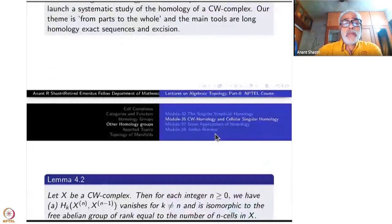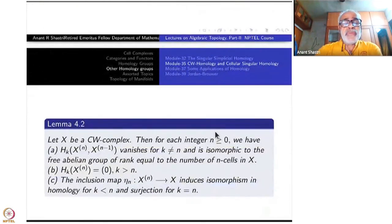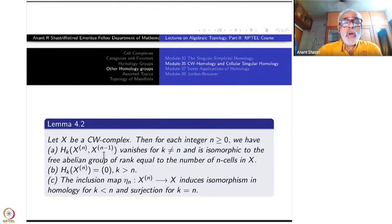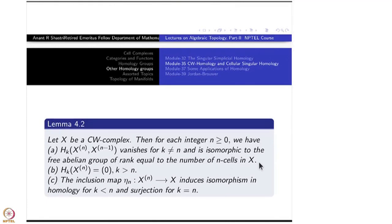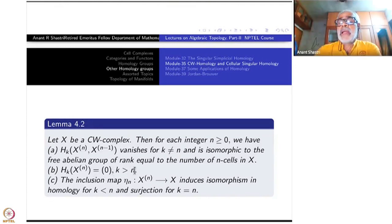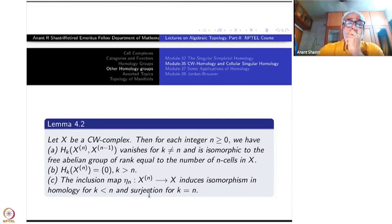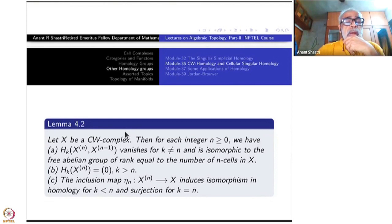We have made a good beginning in this lemma, understanding the homology of CW complexes one step at a time. We shall now launch a systematic study. Our theme is from parts to the whole, and the main tools are just long homology exact sequences and the excision theorem. Let X be a CW complex. Then for each integer N greater than 0, the K-th homology of the N-th skeleton modulo the (N-1)-th skeleton vanishes for K not equal to N, and is isomorphic to the free abelian group of rank equal to the number of N-cells in X.